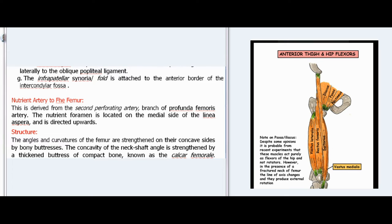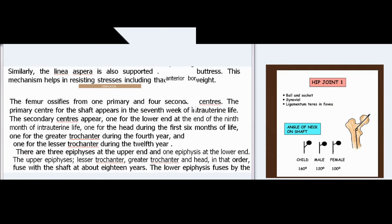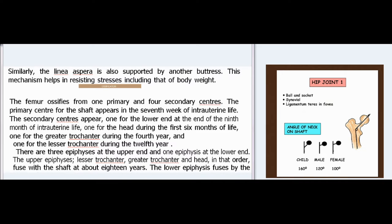The nutrient artery to the femur is derived from the second perforating artery, branch of profunda femoris artery. The nutrient foramen is located on the medial side of the linea aspera and is directed upwards. The angles and curvatures of the femur are strengthened on their concave sides by bony buttresses. The concavity of the neck-shaft angle is strengthened by a thickened buttress of compact bone known as the calcar femorale. Similarly, the linea aspera is also supported by another buttress. This mechanism helps in resisting stresses including that of body weight.